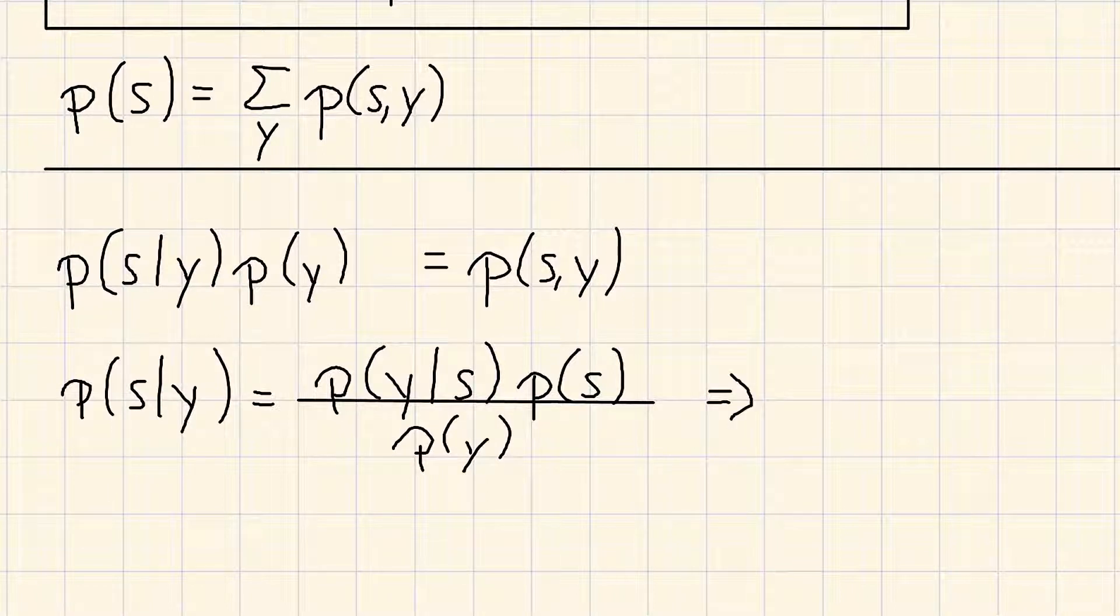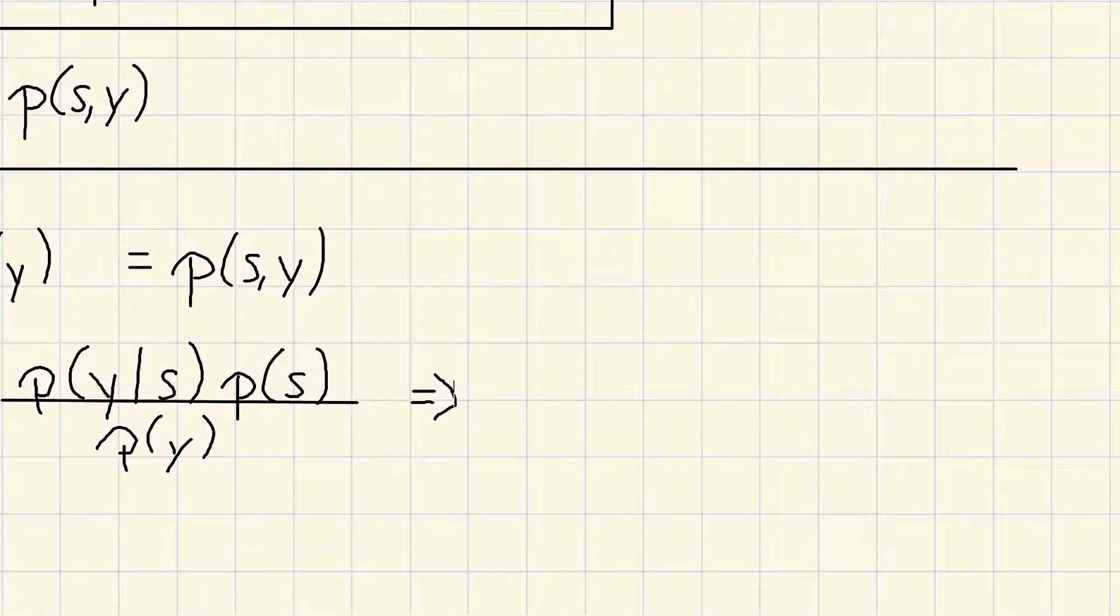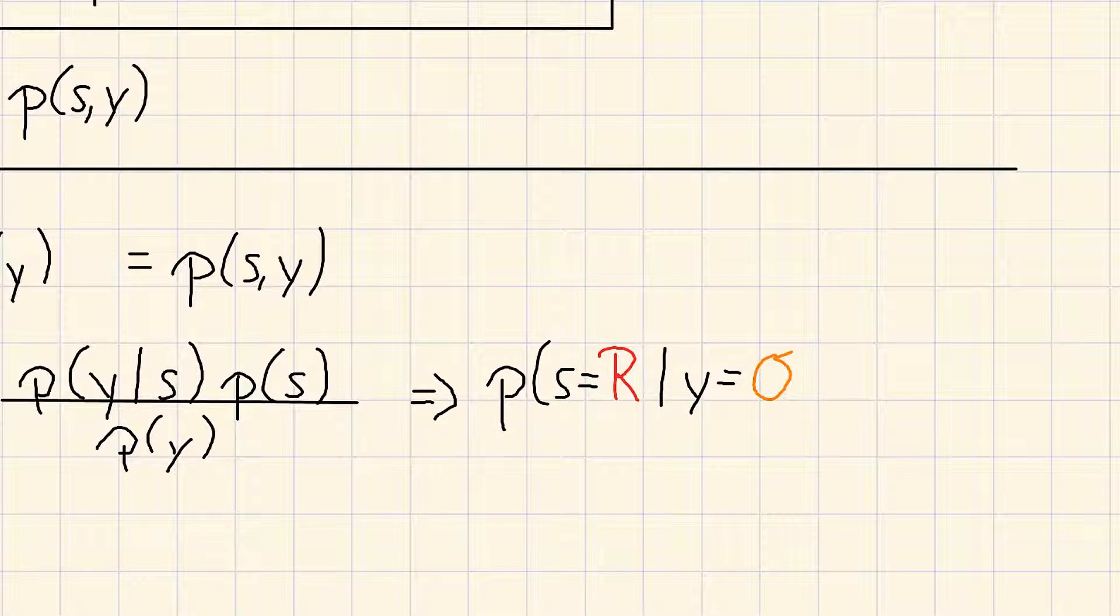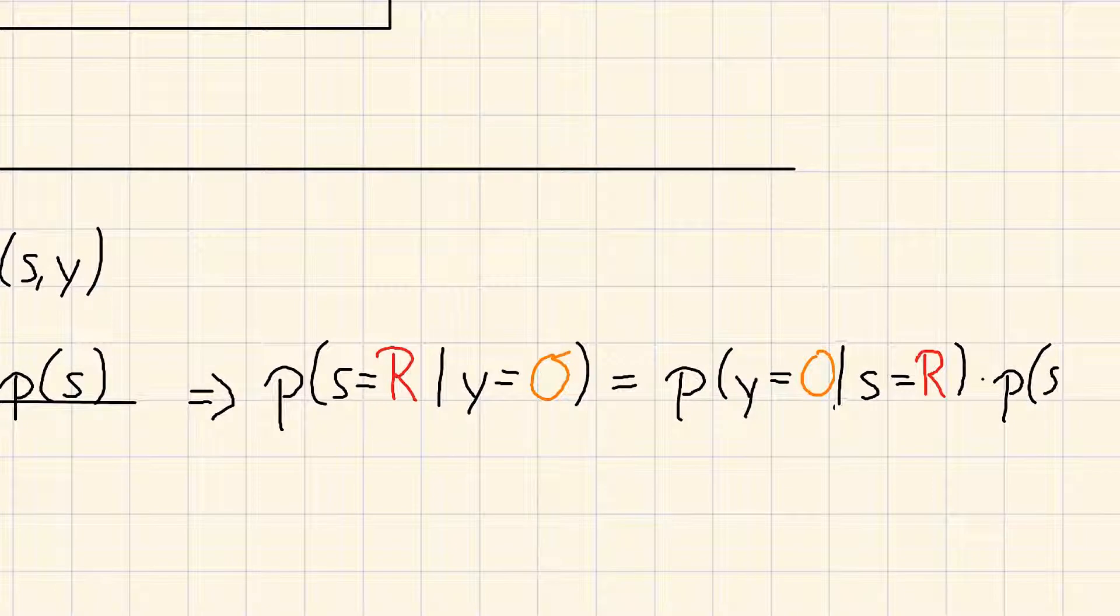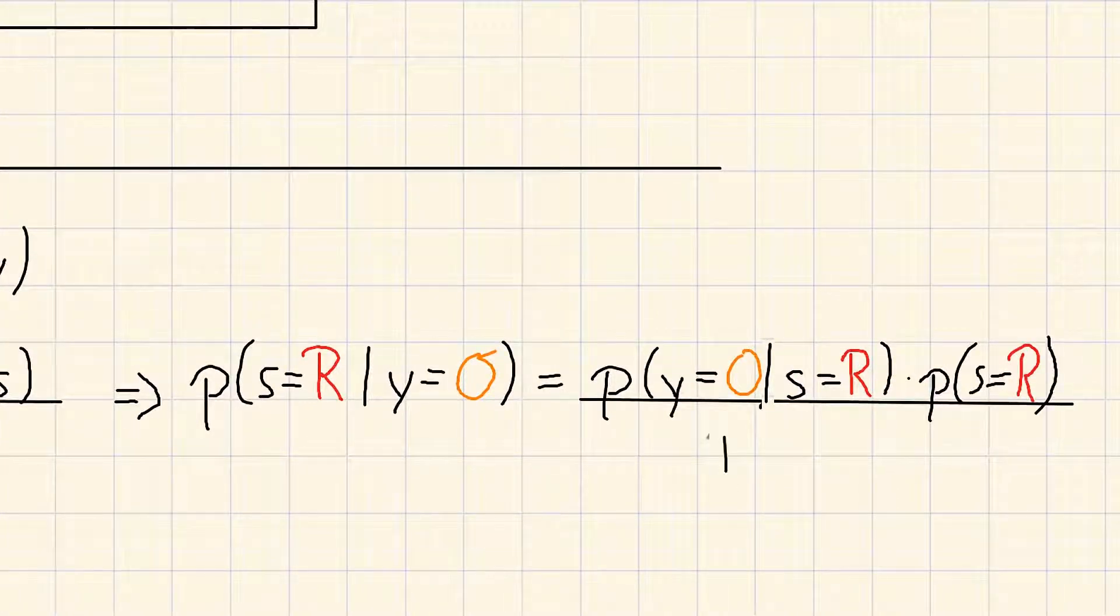Then we could also write that down in explicit form again like this. p of s is equal to r given y is equal to o is equal to p of y is equal to o given s is equal to r times p of s is equal to r. And we divide that by p of y is equal to o.